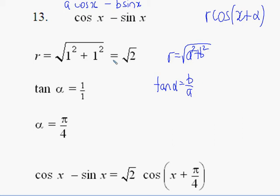And the last four in this group, we want to write in the form R cos(x + α). So again, if we expand that out, it gives us some number times cos x minus some number times sin x.